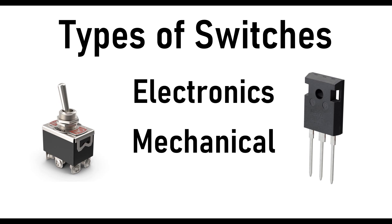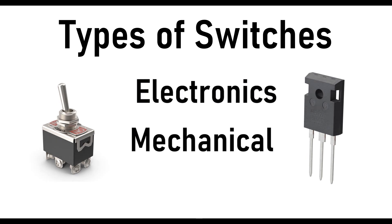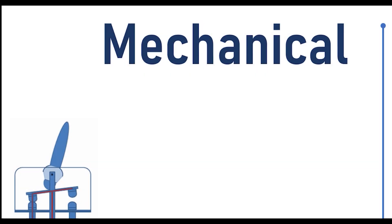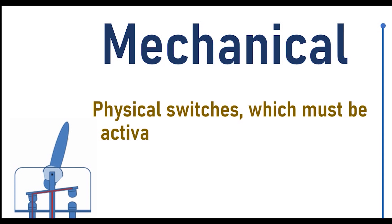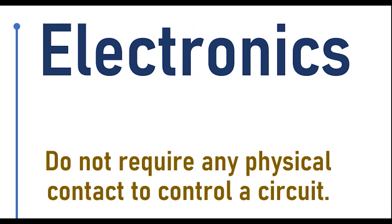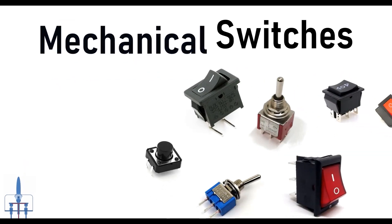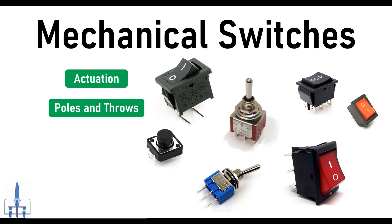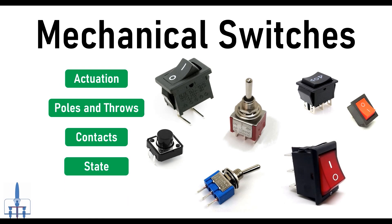Now let us discuss the types of switches. Basically, switches can be divided into two different types: first, mechanical switches, and second, electronic switches. In this video we will discuss about mechanical switches, and in the upcoming video we will discuss about electronic switches, that is semiconductor switches. Mechanical switches can be classified into different types based on several factors such as method of actuation, number of poles and throws, number of contact, operation and construction, and based on state.